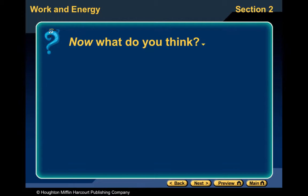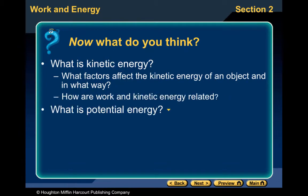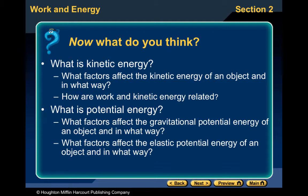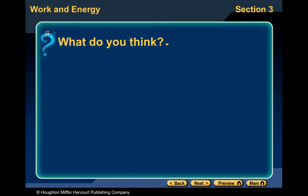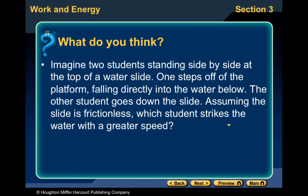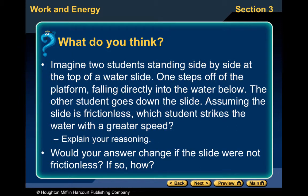Now you should know the difference between potential and kinetic energy and how to calculate them. Next, we look at conservation of energy. Imagine two students standing side by side at the top of a water slide — one steps off the platform falling directly into the water, the other goes down the slide. Assuming the slide is frictionless, which student strikes the water with greater speed? Think about it as we go through the material.